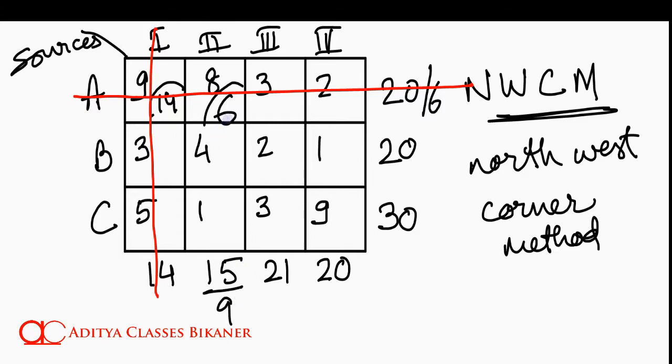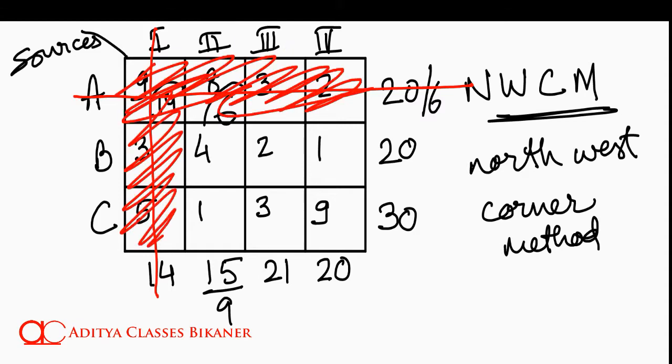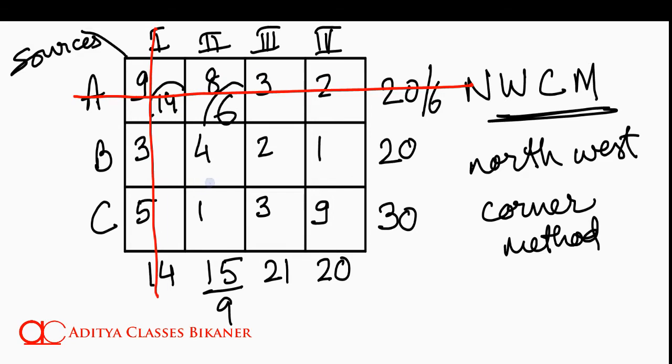Now if I look at this matrix, what is the North West corner of my matrix? This 4 is the North West corner. Because everything else has been removed. Now if I go to this 4, which is B second, how much can I assign over here?